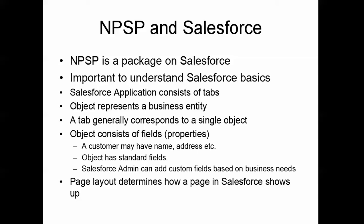An application consists of many tabs, and a tab corresponds to an object. An object represents a business entity. For example, a customer is represented by a business entity called an object called Account. An object consists of properties or fields — for example, a customer consists of first name, last name, address, phone number, and email address. These are the properties we want to capture for an object of a customer type.